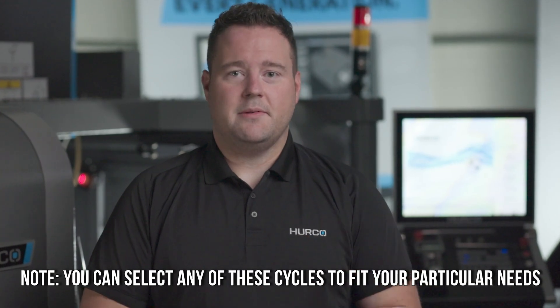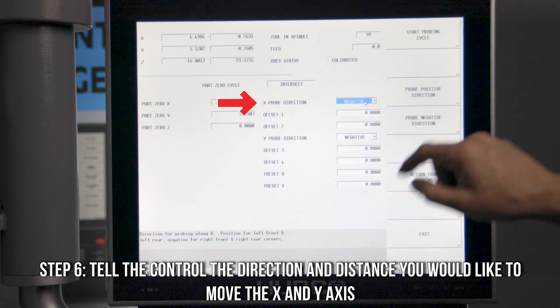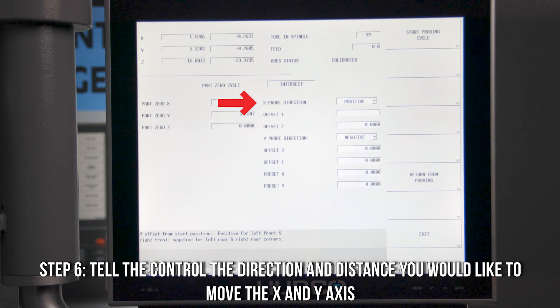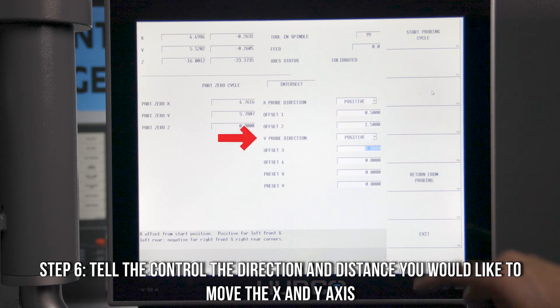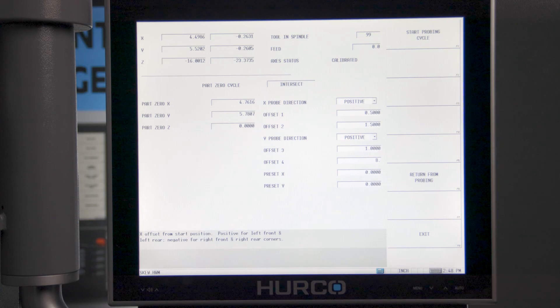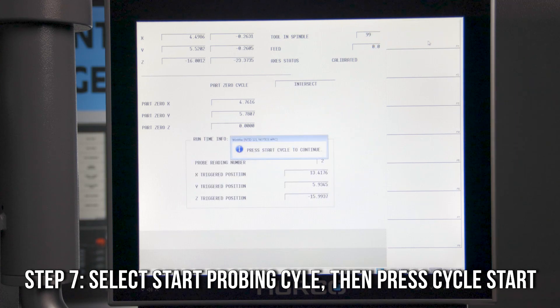You can use any of these cycles listed on the screen, but for demonstration purposes, we're going to select the plain intersection soft key. Once you're at this screen, you'll need to tell the control which direction in X and Y you want to move, as well as the distance between the probe hits. You will then select start probing cycle and press the cycle start button.